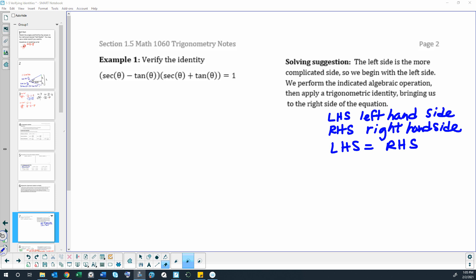Here we are, ready to try our first trigonometric proof. Example 1, we are going to verify the identity: secant theta minus tangent theta times secant theta plus tangent theta equals 1.